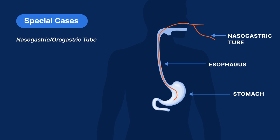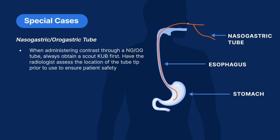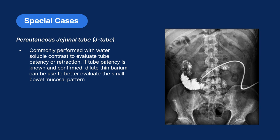In special cases, a nasogastric or orogastric tube may be used to administer contrast during a small bowel follow-through. Always obtain a scout KUB first and have the radiologist assess the location of the tube tip prior to use to ensure patient safety. It is important that the catheter tip is in the correct location before injecting contrast. A percutaneous jejunal tube may also be utilized; these procedures are commonly performed with water-soluble contrast to evaluate tube patency or retraction. If tube patency is already confirmed, dilute thin barium can be used to better evaluate the small bowel mucosal pattern.